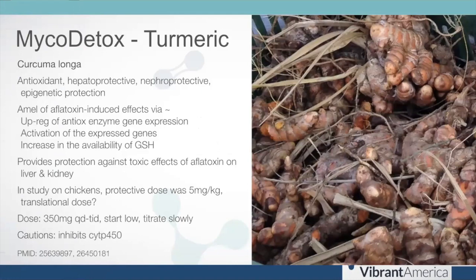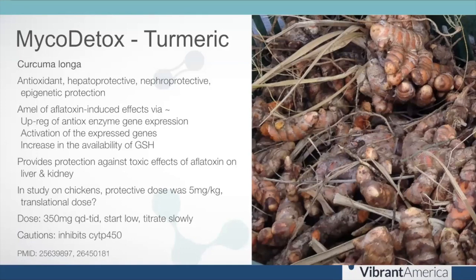Most things that are good for mold are cytochrome P450 inhibitors — I think the body is wise enough to know there's only so much glutathione to go around, so we slow phase one so the intermediary metabolite doesn't cause damage while waiting for enough glutathione. Turmeric — curcuma longa — is one of my favorites. It has antioxidant, hepatoprotective, nephroprotective, and epigenetic cell-protection properties. It's been studied specifically against aflatoxin and ochratoxin. I start at 350 milligrams once a day and titrate slowly, because I've seen mold-sick people crash on turmeric.